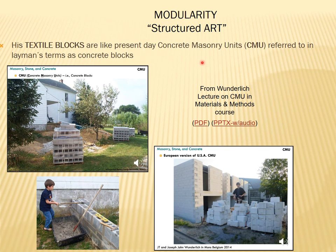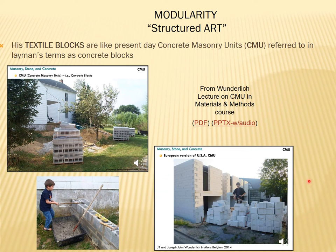You can see more on modular structural art — what Frank Lloyd Wright called his textile blocks — in a concrete masonry unit context, covered in my materials and methods course lecture. He made 450 concrete blocks for one addition; one building shows my son helping out and carving his name in the cornerstone. There is also a different kind of CMU seen in Mons, Belgium — very lightweight, not seen in the United States.